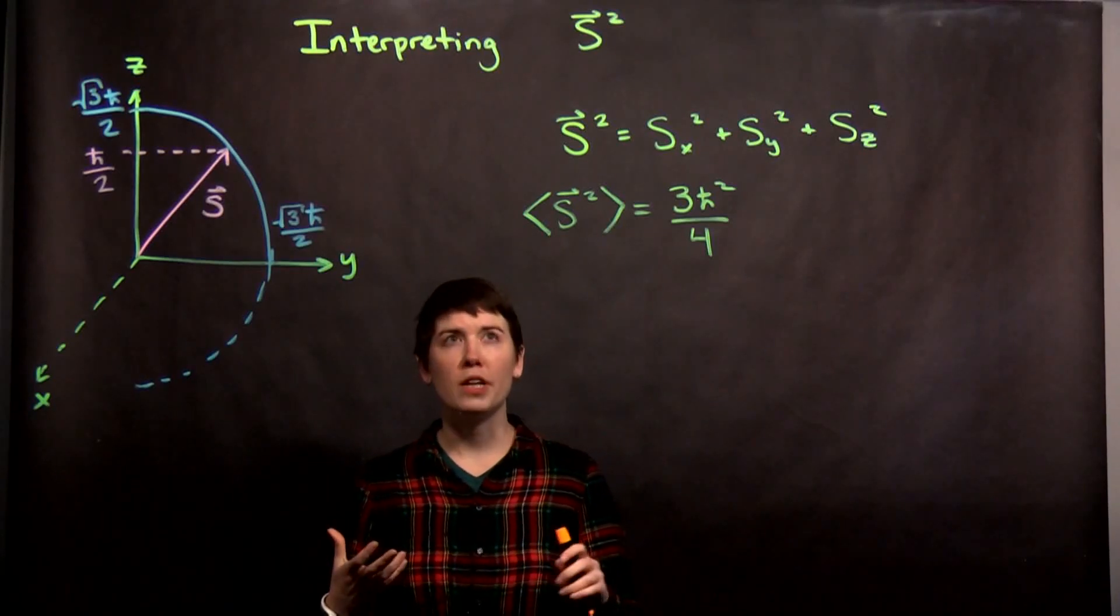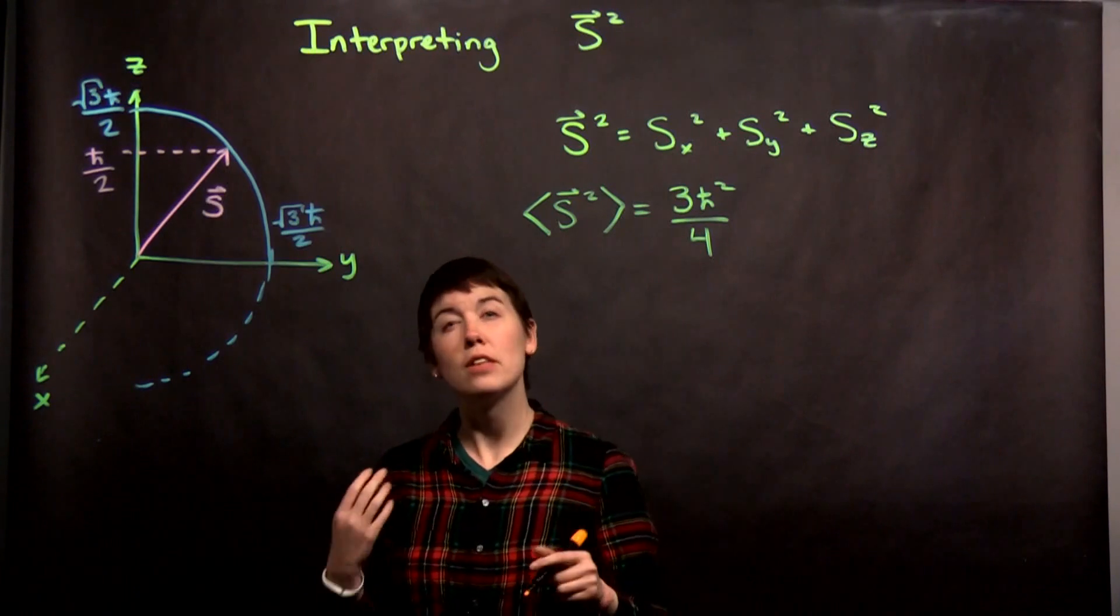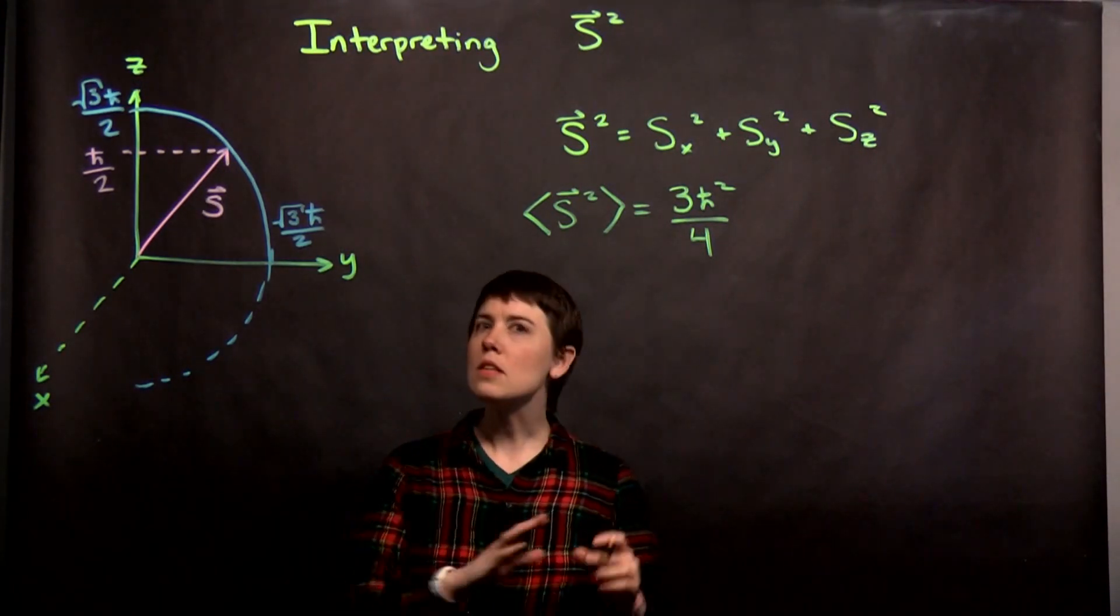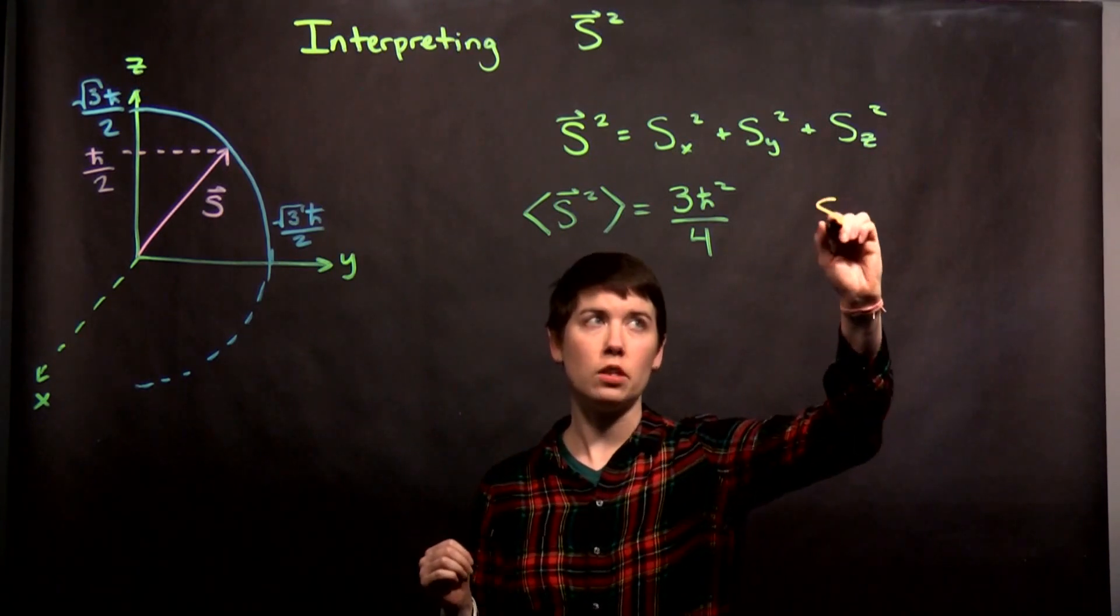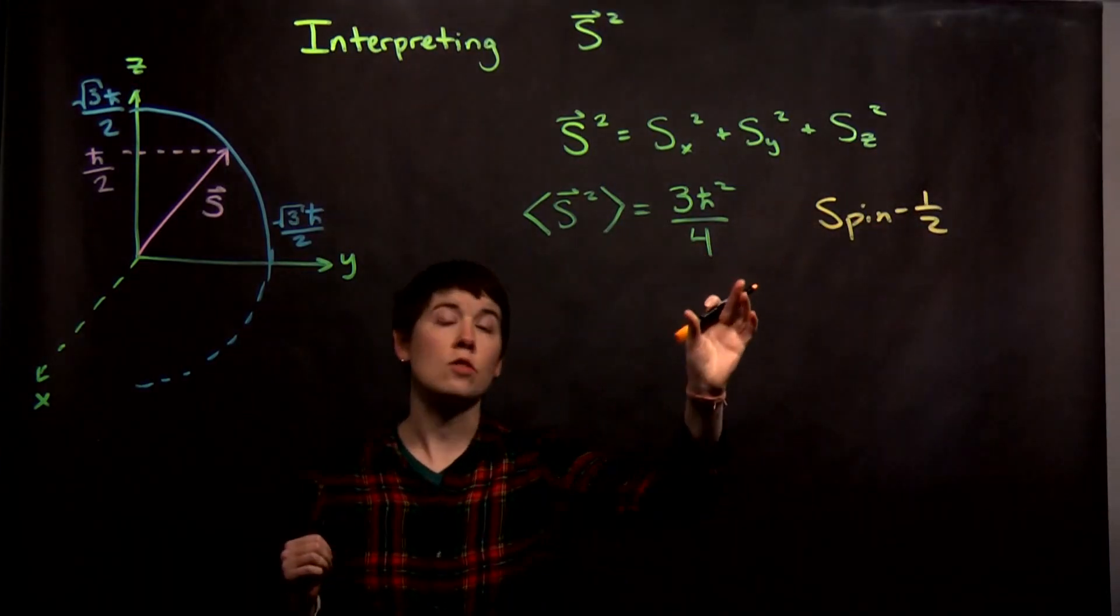Let's briefly try to interpret what this s² operator is and what this expectation value is telling us. Because we see that for any spin one-half state whatsoever, we get the same expectation value.